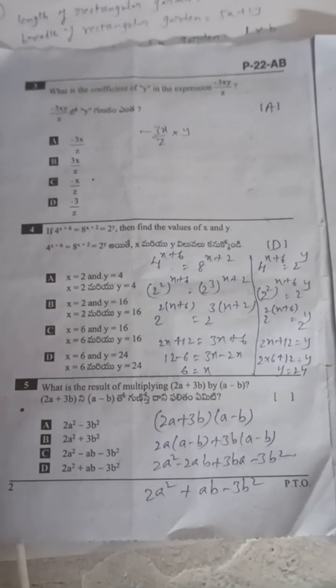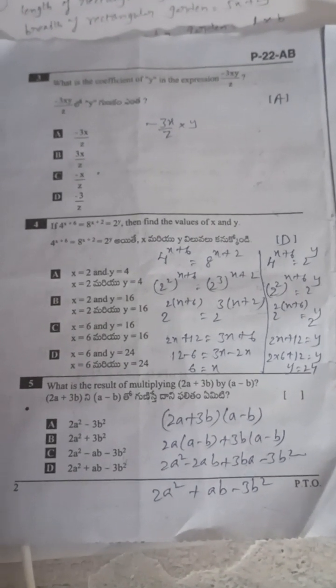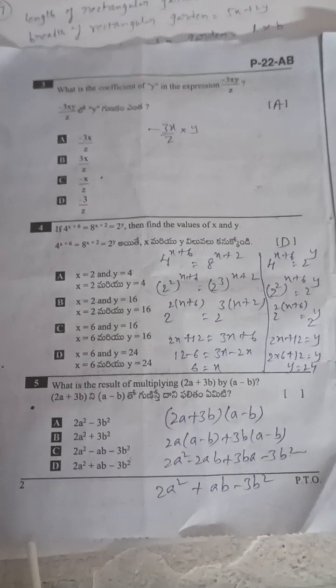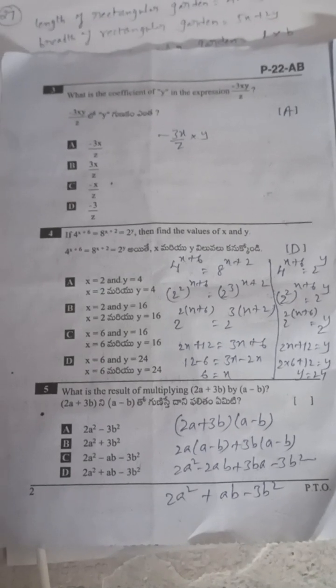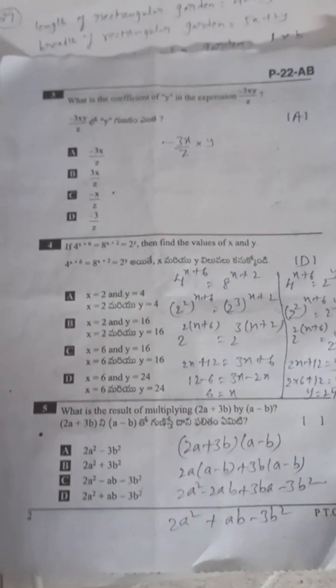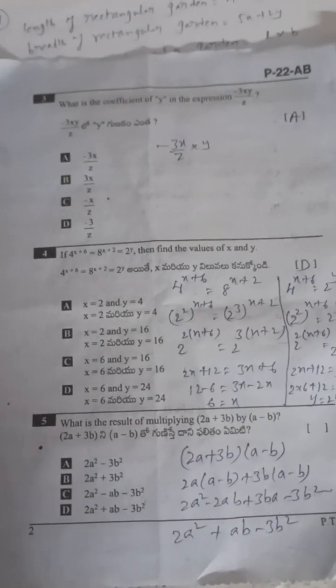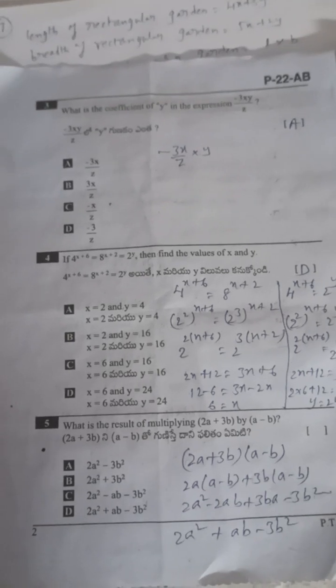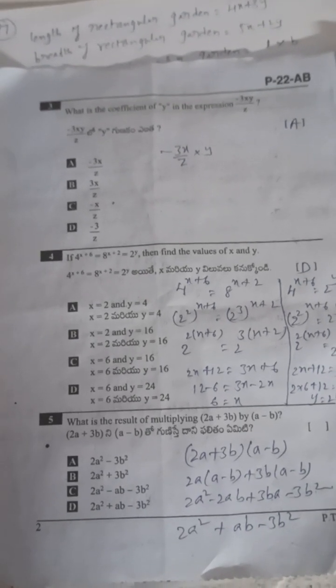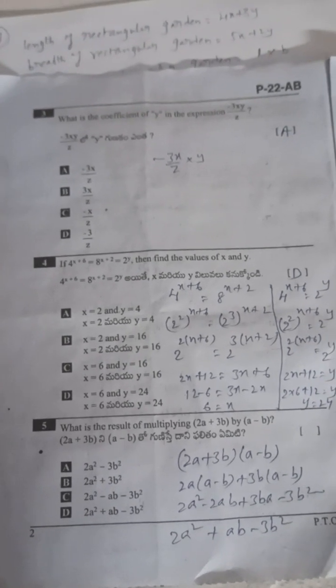Now using 4 power (x+6) equals 2 power y, since 4 equals 2 squared: 2 power 2(x+6) equals 2 power y. So y equals 2(x+6). Substituting x equals 6: y equals 2 into 6 plus 12, so y equals 12 plus 12, giving y equals 24.